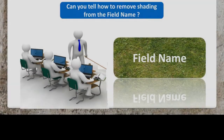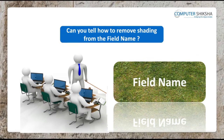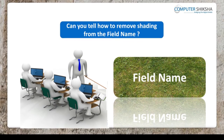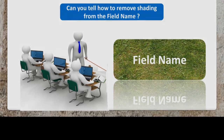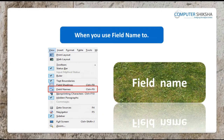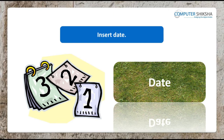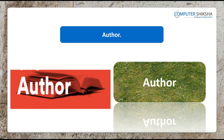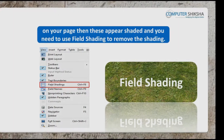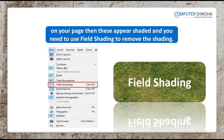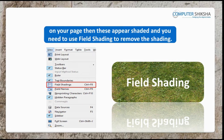Can you tell what you will need to do to remove shading from the field name? When you use field name to insert date, time, author, etc. on your page, then these appear shaded and you need to use field shading to remove the shading.